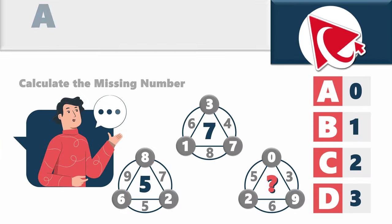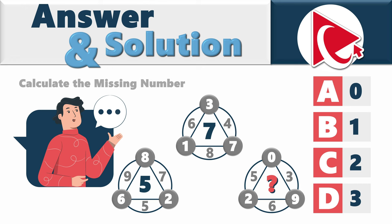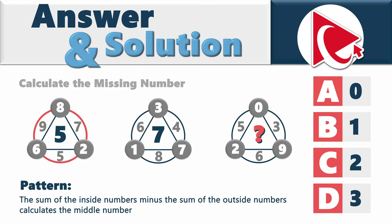As you might have guessed, to calculate the number we need to detect the pattern. The pattern here is simple but not very obvious. The pattern is that the sum of all inside numbers minus the sum of the outside numbers calculates the middle number.